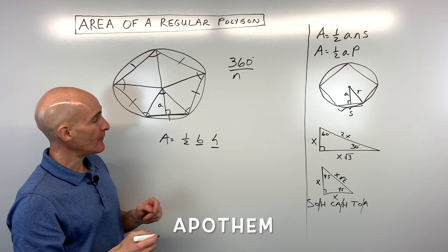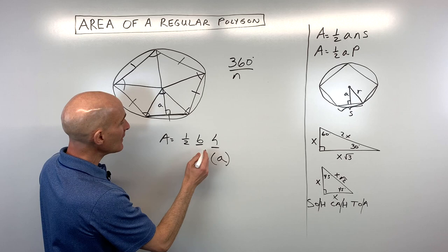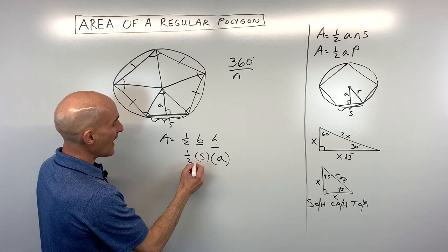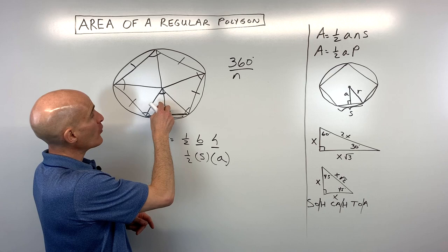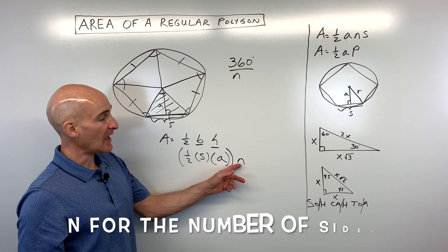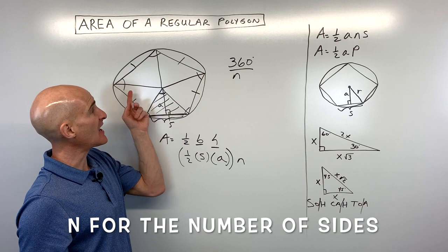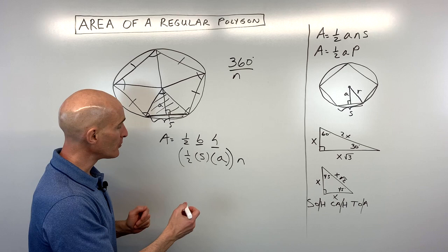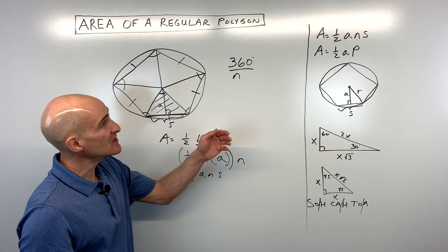Instead of calling this the height, we put A for apothem. The base — the bottom of the triangle — we call S, representing the side length. So instead of one-half base times height, we have one-half S times A. If we find the area of one triangle and multiply by N (the number of triangles, same as the number of sides), we get the total area. Rearranging, that's one-half A times N times S — one of the common formulas for area of a regular polygon.